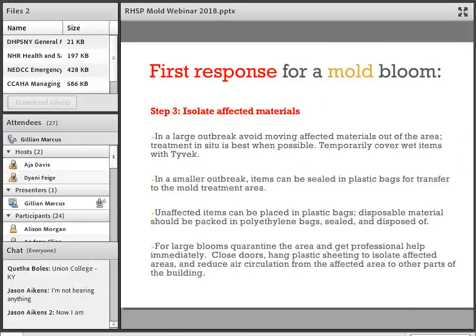The third step after addressing the humidity or moisture source is to isolate affected materials. If you have a very large outbreak, unaffected items can be placed in plastic bags and removed. Disposable materials should be packed in polyethylene bags, sealed, and disposed of properly. If it's a smaller outbreak, you can put the moldy items into plastic bags and transfer them to a treatment area — but avoid leaving moldy objects in plastic bags for a long period, as this can accelerate mold growth. If it's a very large outbreak, quarantine the area, close doors, hang plastic sheeting, and reduce air circulation from the affected area to the rest of the building.